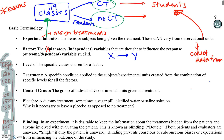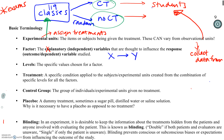Levels refer to how many possible values exist within a particular factor or variable. Now, treatments: if we only have one thing we're manipulating, like CT or no CT, those are the two treatments available. But let me make this a little more exciting.